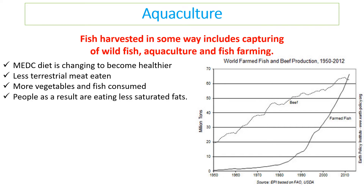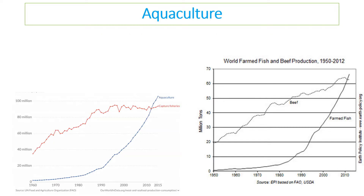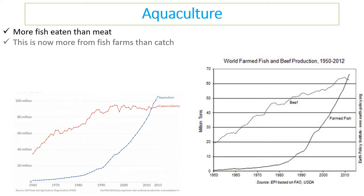That is good because people are eating less saturated fats, but there is extra pressure on fisheries as a result. The average person now eats 20 kilograms of fish and 8 kilograms of meat per year, whereas in the past that would definitely have been the opposite way around. This is causing huge stress because of the amount of fish being eaten — fish is now being eaten more than meat.